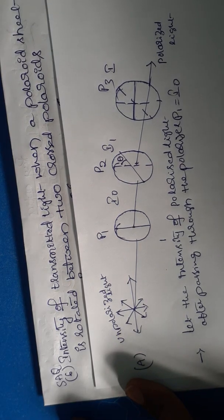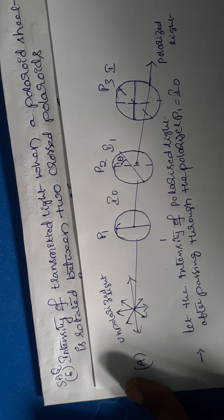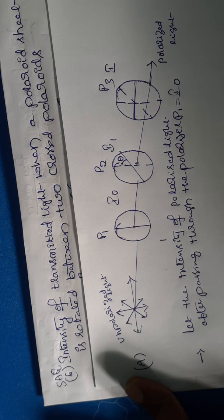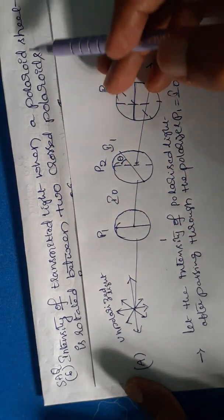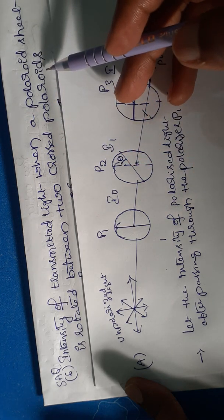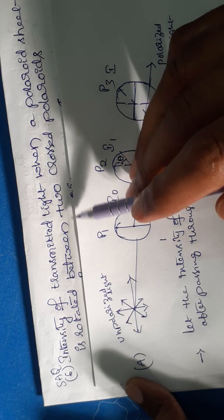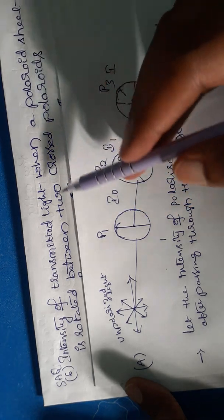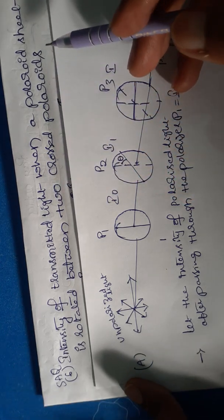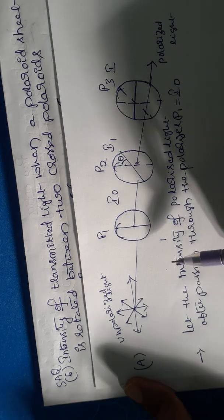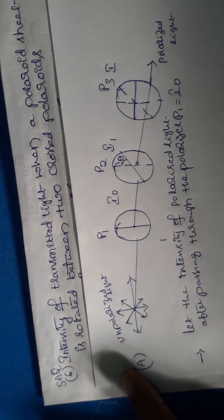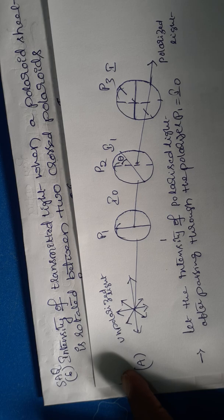Welcome to our physics class. In the wave optics chapter in intermediate second year physics, we have an important short answer question: finding the intensity of transmitted light when a Polaroid sheet is rotated between two crossed Polaroids. Polarization is the process of restricting the vibrations of electric vectors in light to only one particular direction, perpendicular to the direction of the wave.